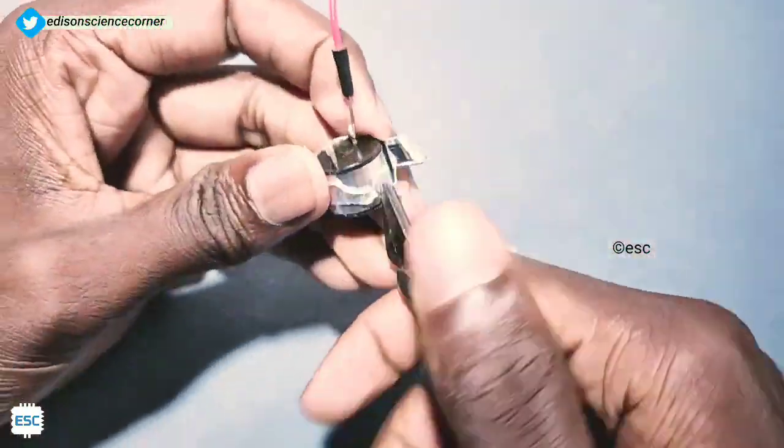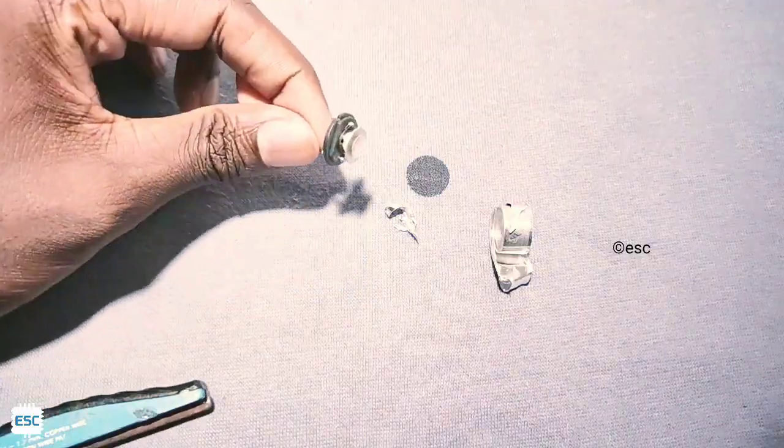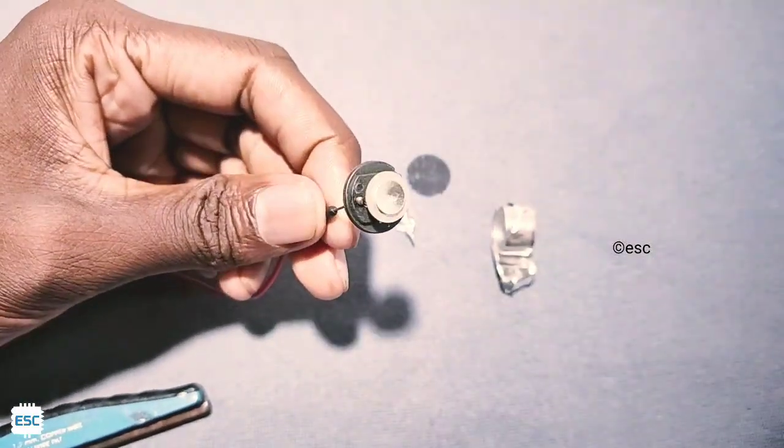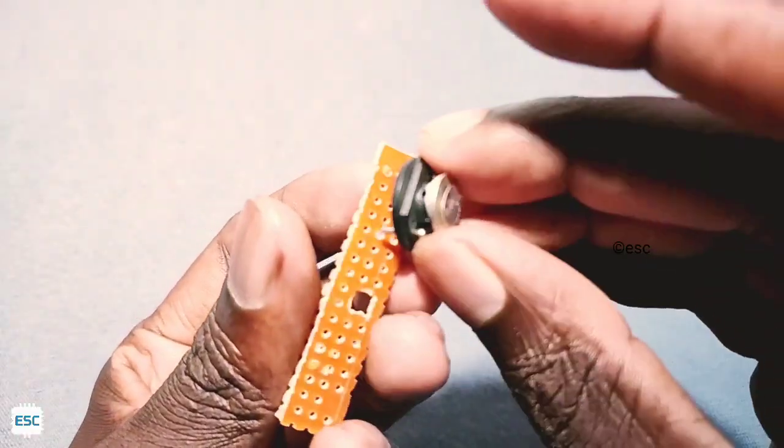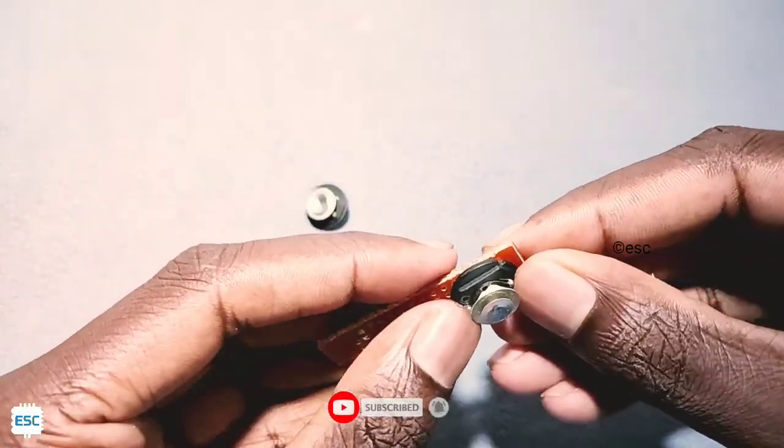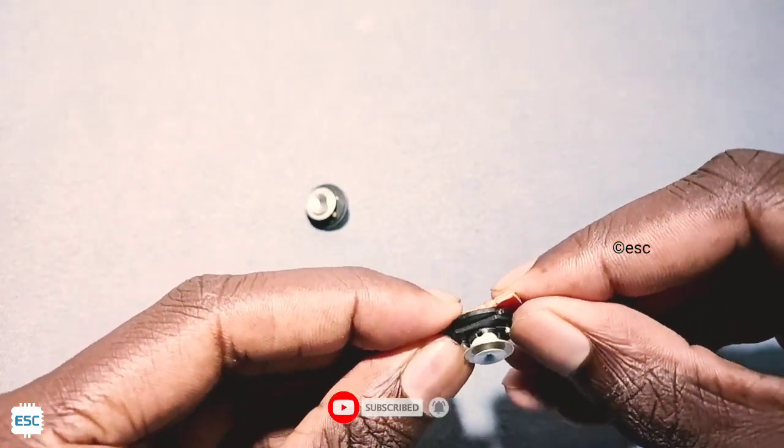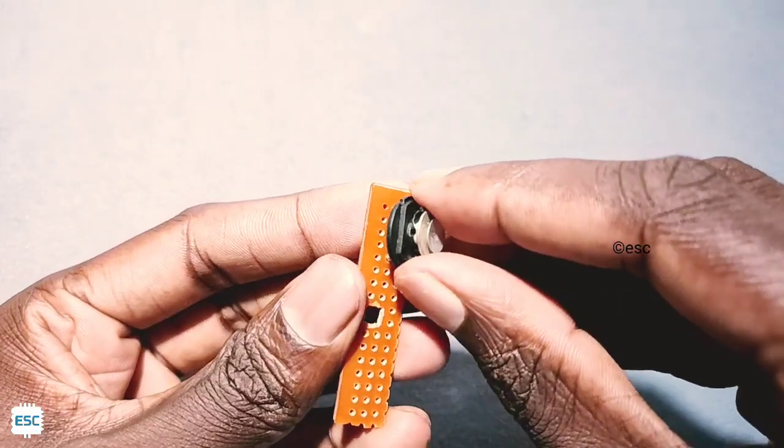Now I removed the protective casing of all transmitters. Now you can see the transmitting disk. I took two small common PCBs and placed the transmitters, and also soldered wires for the transmitters.